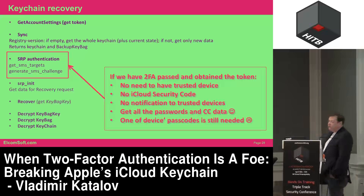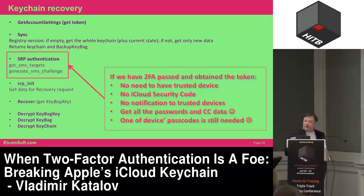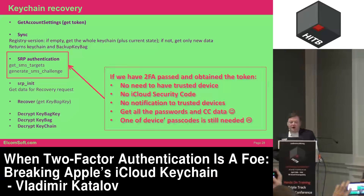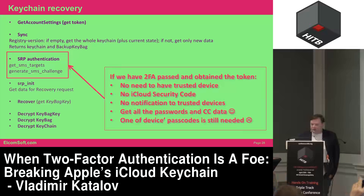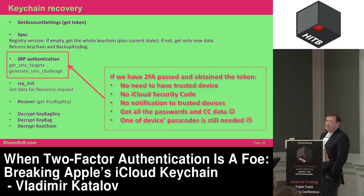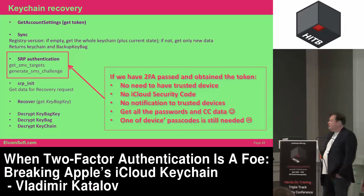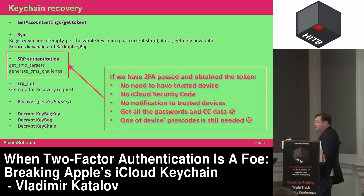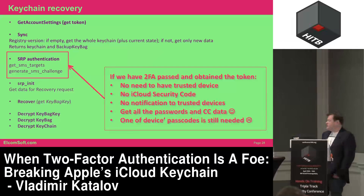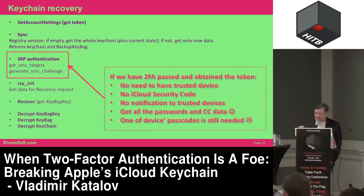Here is how keychain recovery works. You get account settings first by supplying the Apple ID and password, then you get the first token, then add some data. You then get another token, and using that token you can perform sync, initialization, and recover commands. The most important thing is that for the secure remote protocol part, you will have to confirm the code through SMS and enter the special cloud security code. But if we already have two-factor authentication passed and have the authentication token for iCloud — which is normal for accessing documents, backups, and synced data — then it makes it much easier to access the KVS storage and download all the information from there.